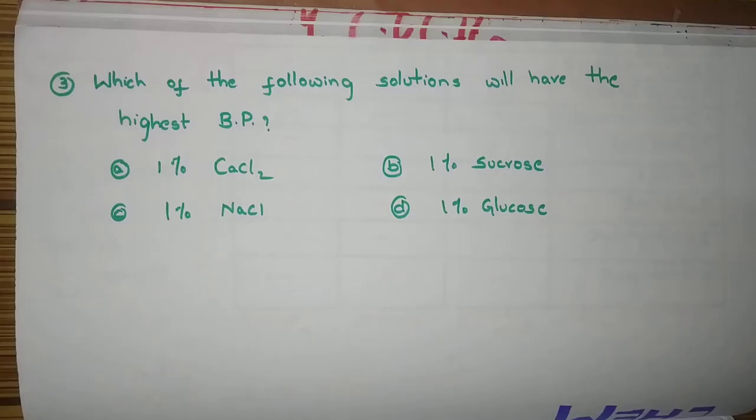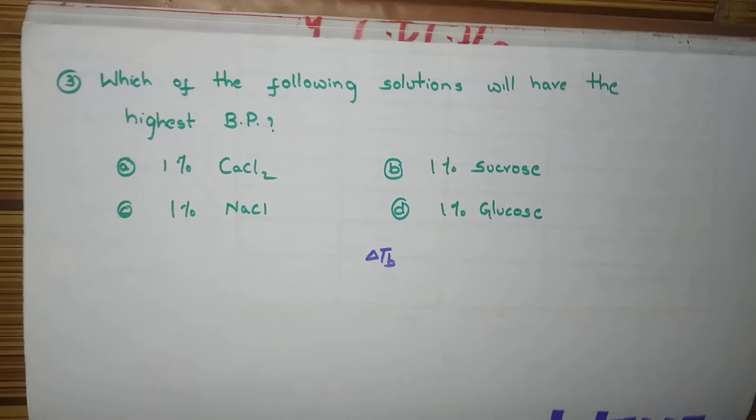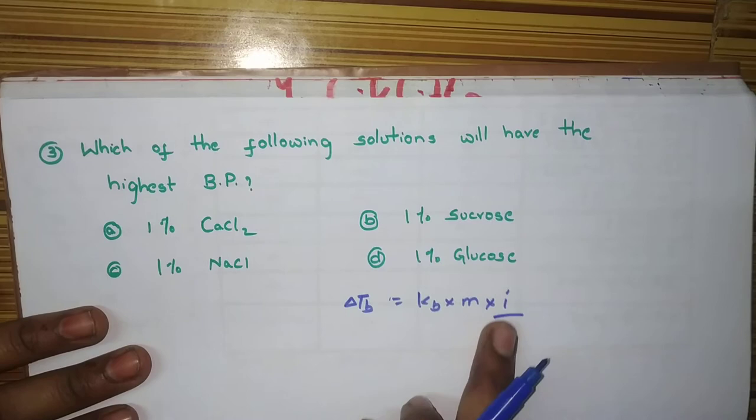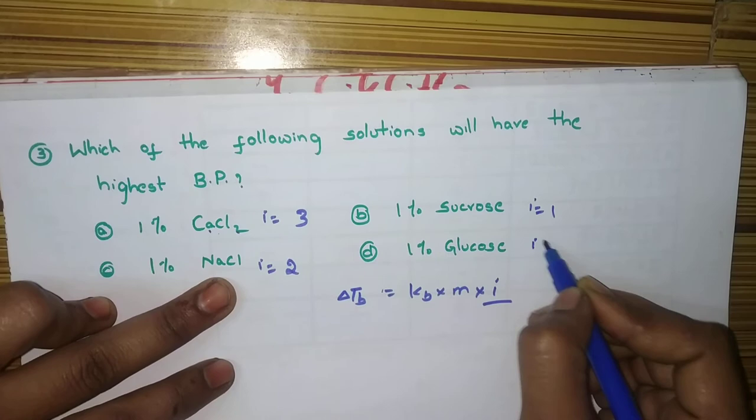And, see this question. Here, they asked the boiling point. And, you know that, Delta T_B is K_B into M into what? i. So, check the i value. Here, i value is 2 plus 1, 3. Here, i value is 2. Sucrose and glucose, they will not dissociate. So, i value is 1.